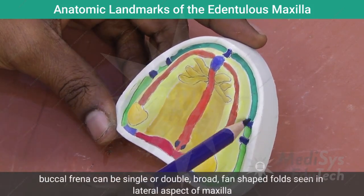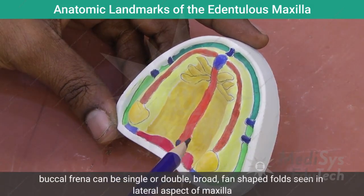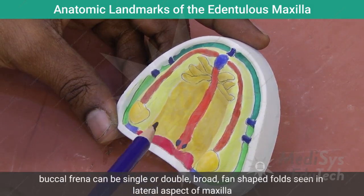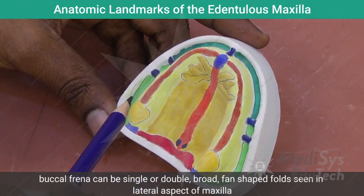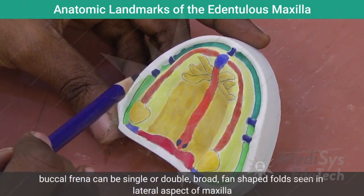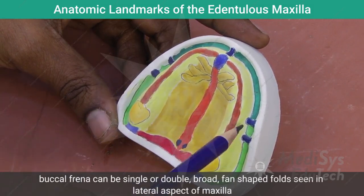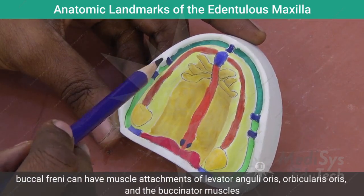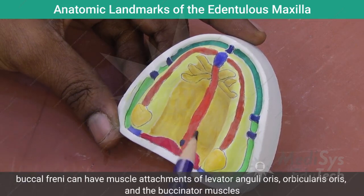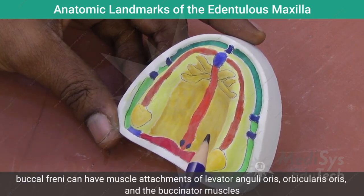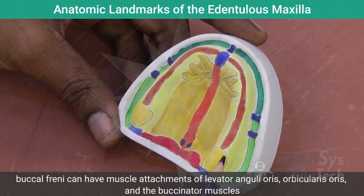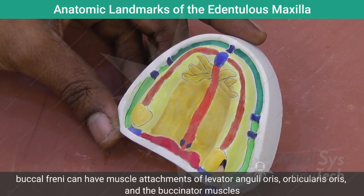The buccal freni can be single or double broad fan-shaped folds seen in the lateral aspect of the maxilla. Buccal freni can have muscle fiber attachments of the levator anguli oris, orbicularis oris, and buccinator muscles.